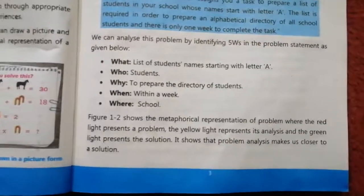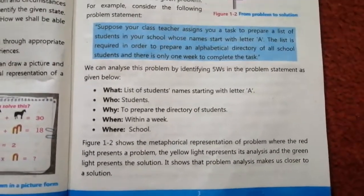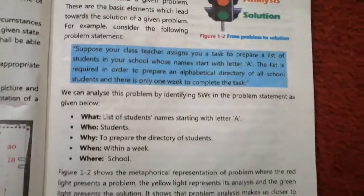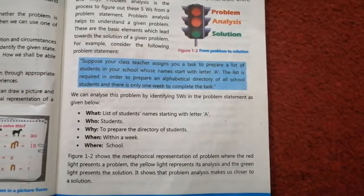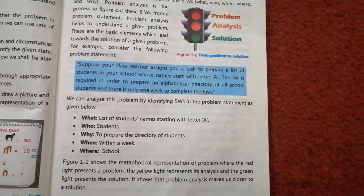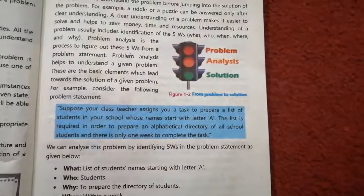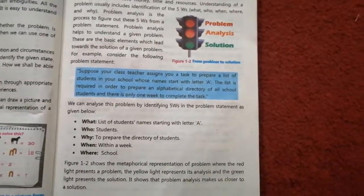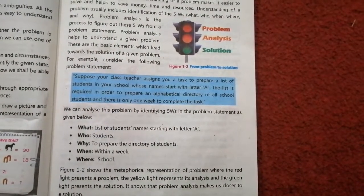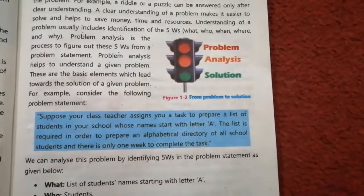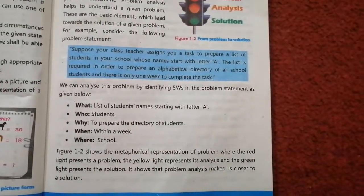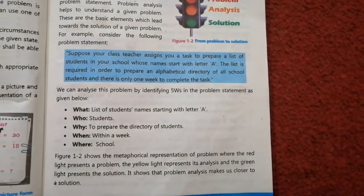Figure 1.2 shows the metaphorical representation of a problem. The red light represents a problem, the yellow light represents its analysis where we analyzed the five W's, and the green light represents the solution.